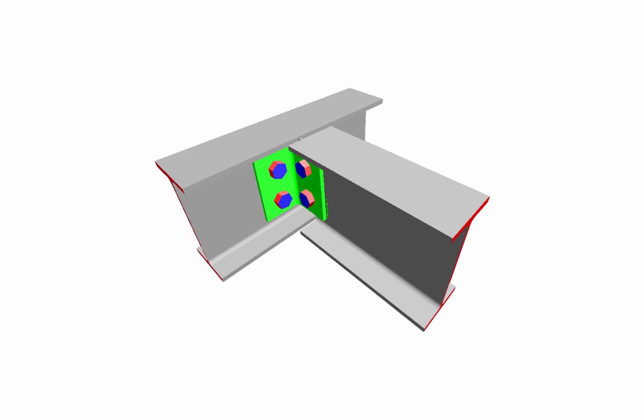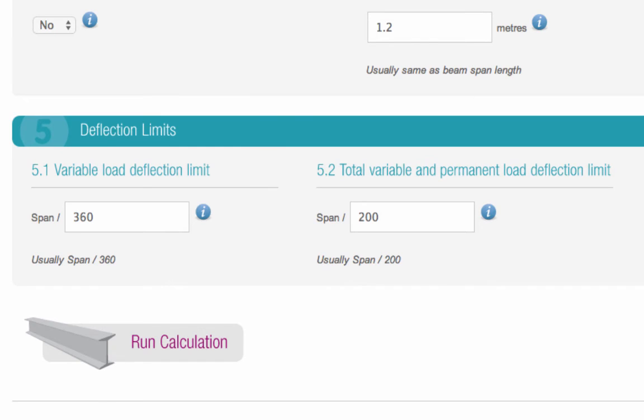If you need more guidance on restraints, please call us. The final section is for deflection limits. A deflection limit is the maximum amount you allow the beam to sag. You can set a limit for how much it can sag under variable loads and under permanent loads.